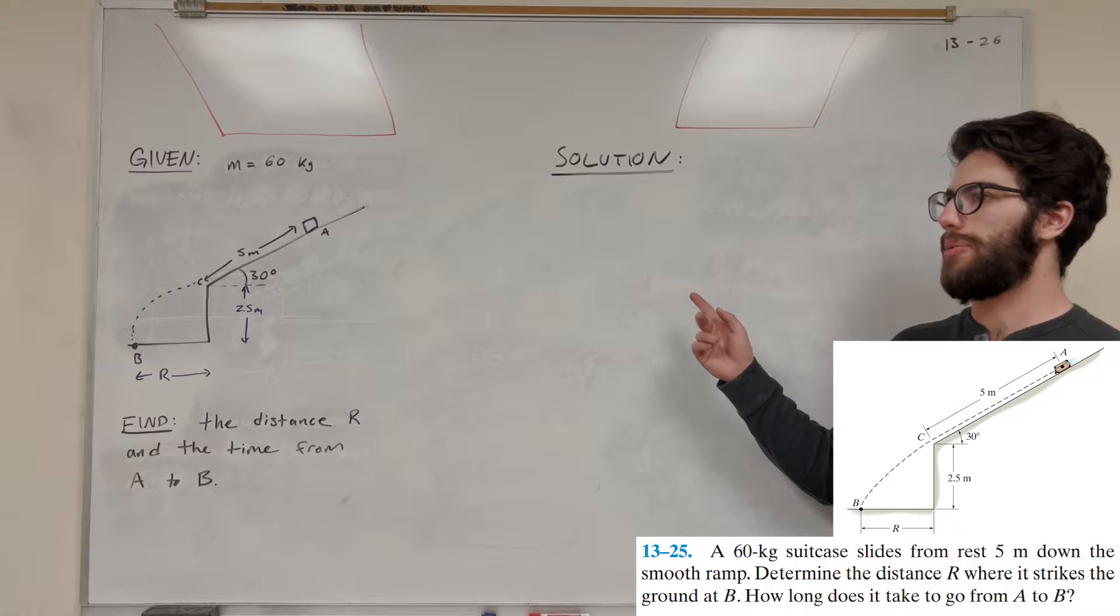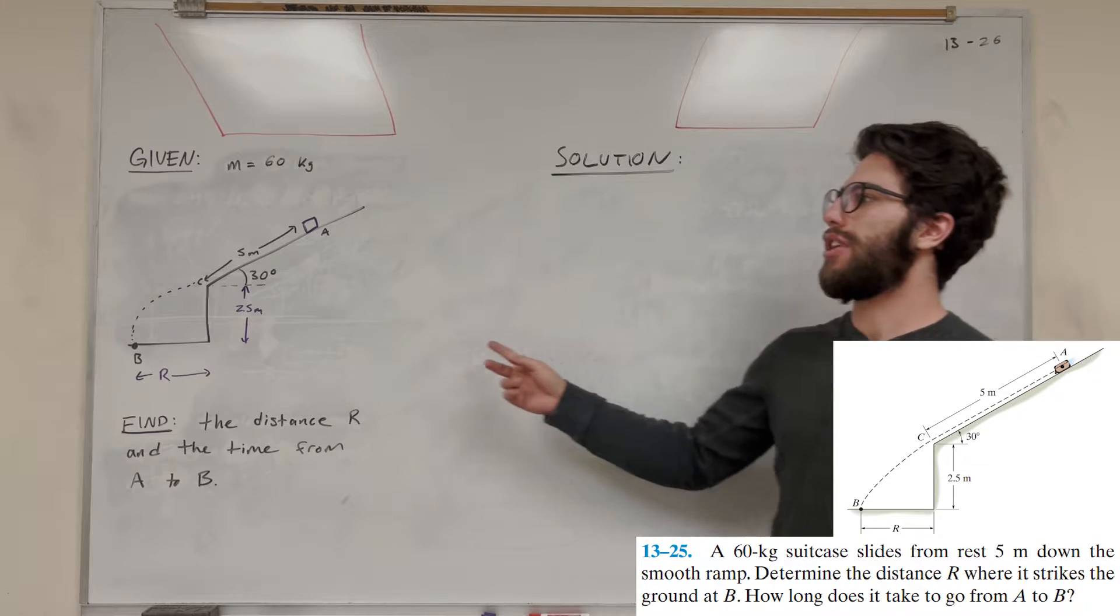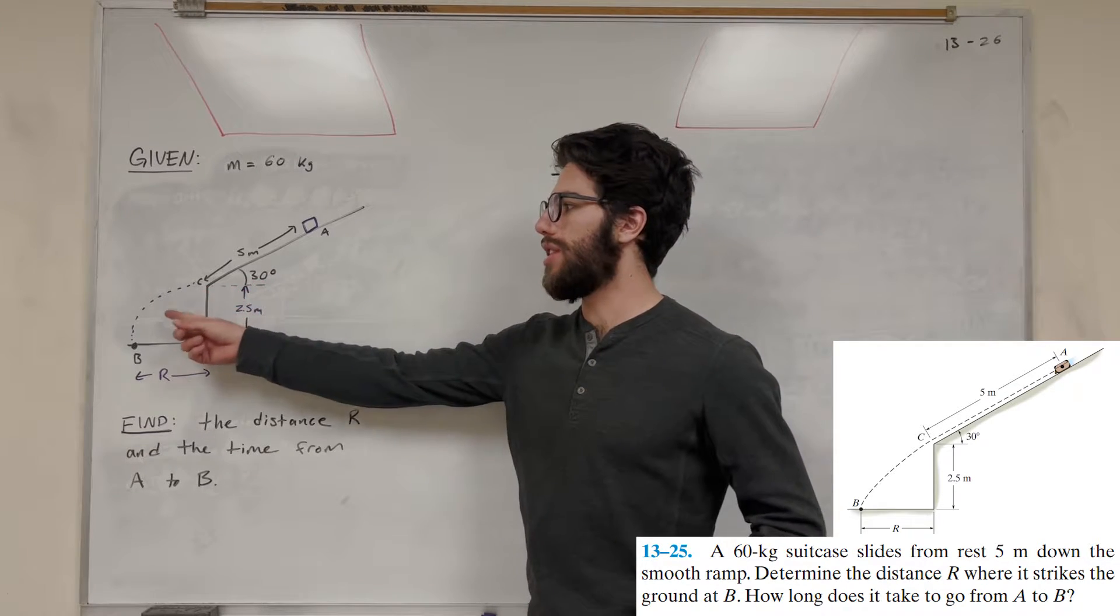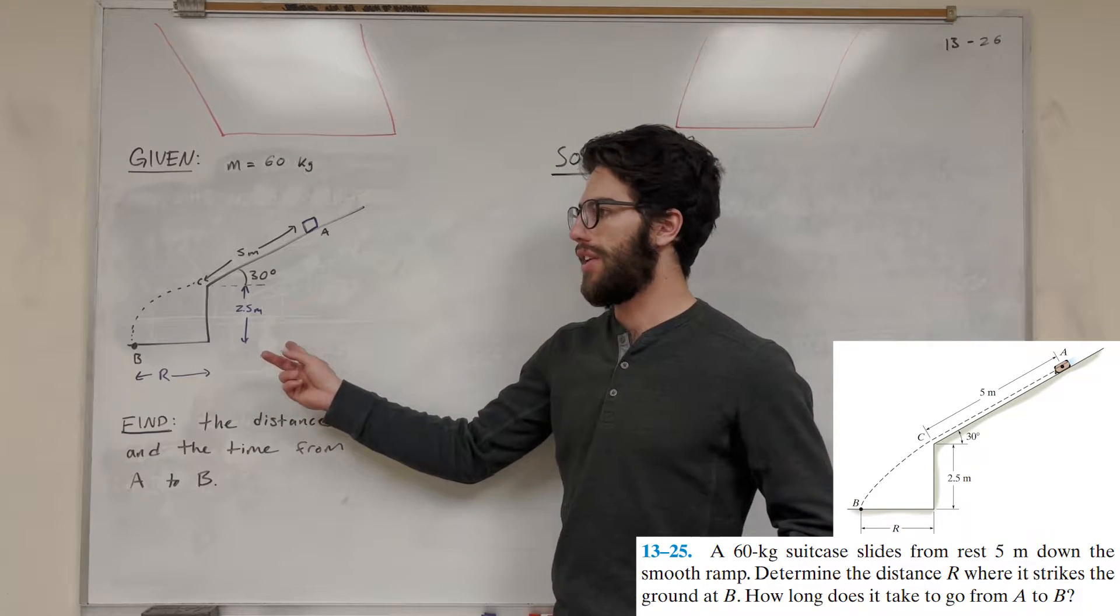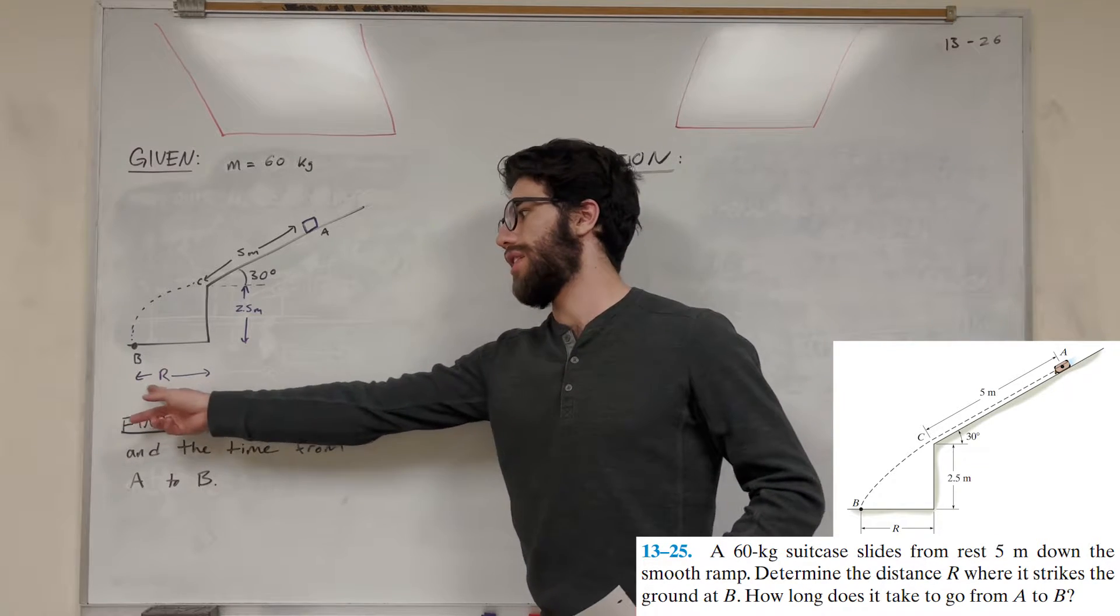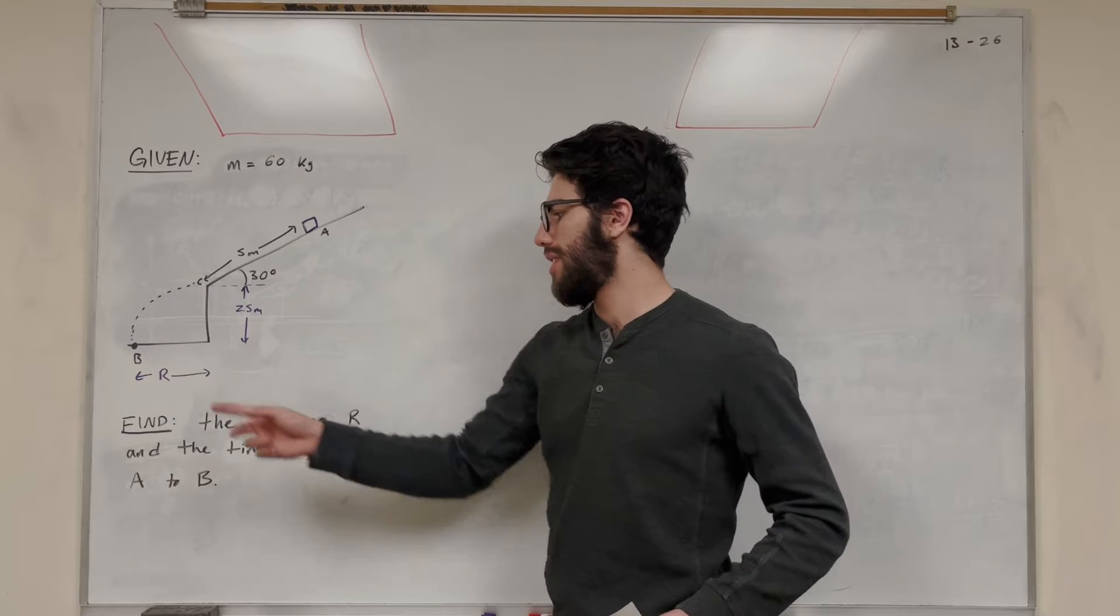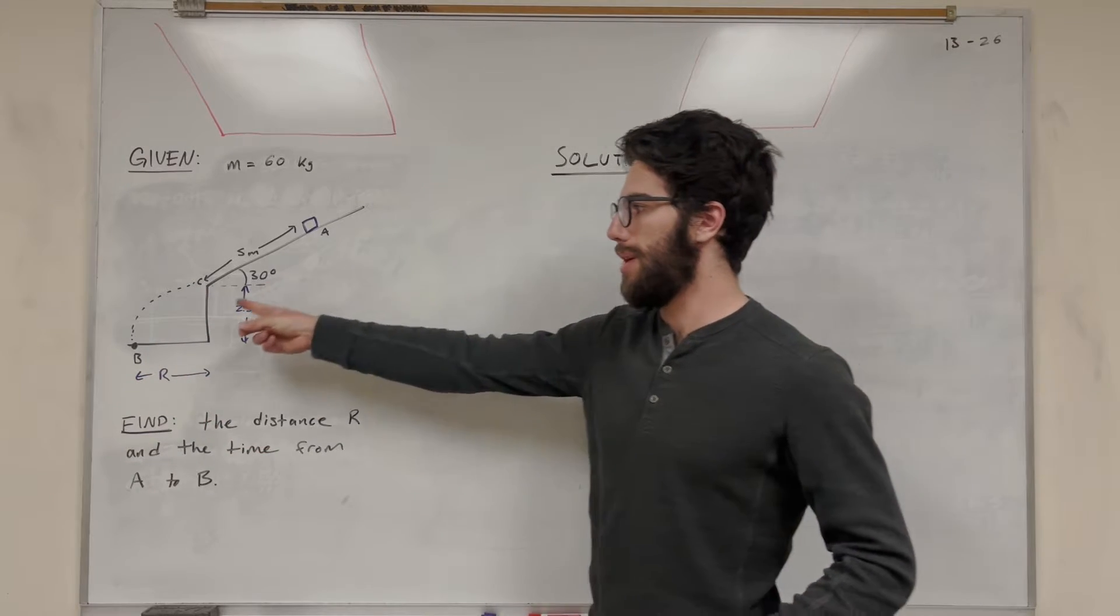So let's solve this problem. We have this ramp with a box sliding down it, and it travels 5 meters down the ramp, and then it falls off the ramp, and hits the ground 2.5 meters below. Our goal is to find the distance R that it travels, and then the time it takes to go from A to B.